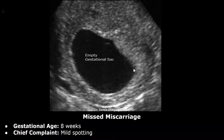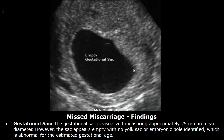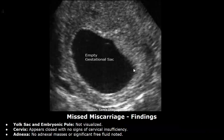This is a report of missed miscarriage; gestational age eight weeks; chief complaint: mild spotting. Here are the findings: the gestational sac is visualized measuring approximately 25 millimeters in mean diameter; however, the sac appears empty with no yolk sac or embryonic pole identified, which is abnormal for the estimated gestational age. Yolk sac and embryonic pole: not visualized. Cervix appears closed with no signs of cervical insufficiency. No adnexal masses or significant free fluid noted.